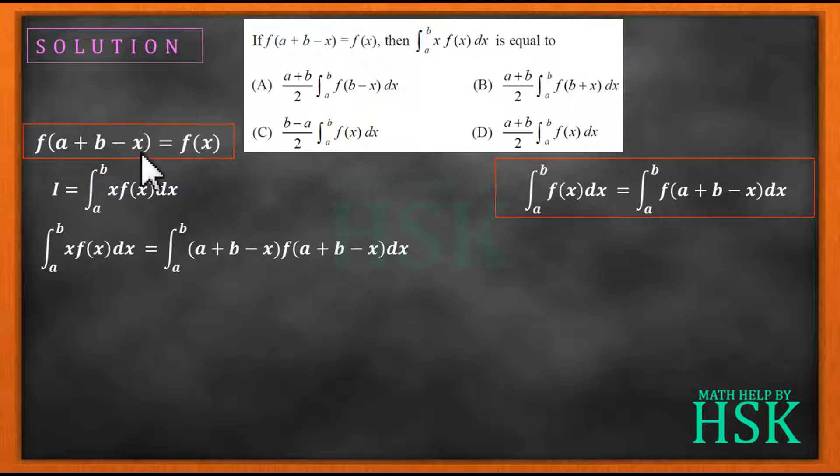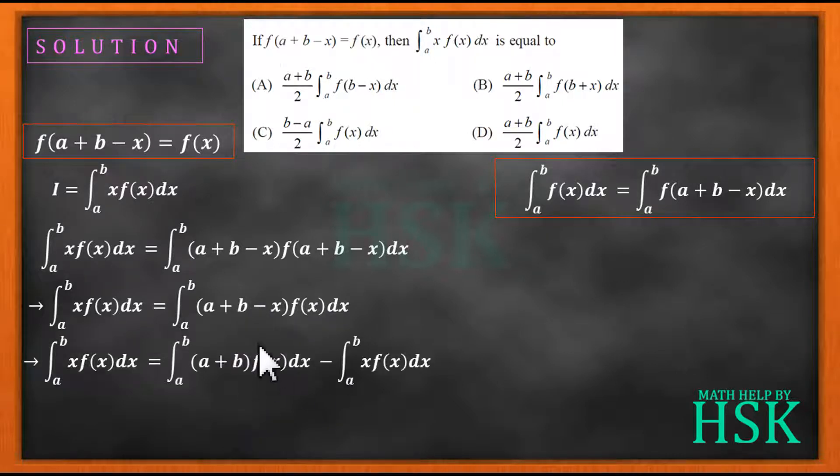Now I have been given that f(a+b-x) is equal to f(x), so I am going to replace this value with f(x). And I am going to convert this single definite integral into two definite integrals like this: (a+b)∫f(x)dx from a to b, and this minus sign comes in between, minus ∫x·f(x)dx from a to b.